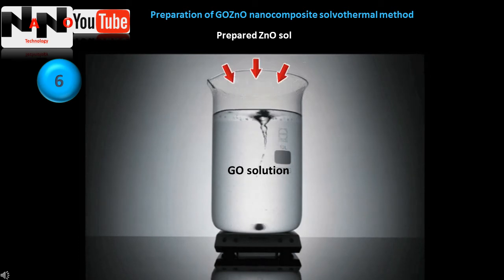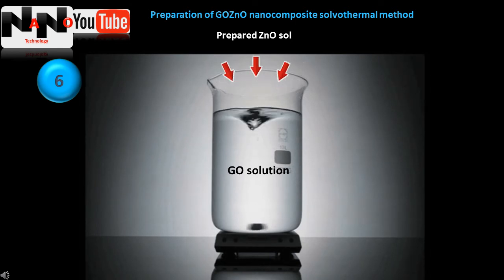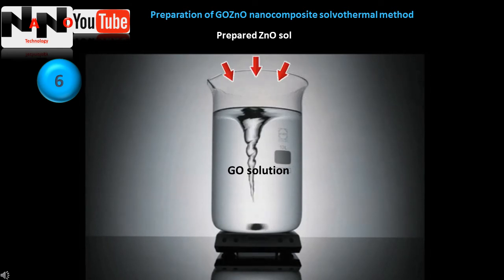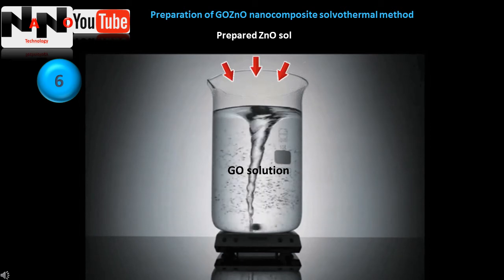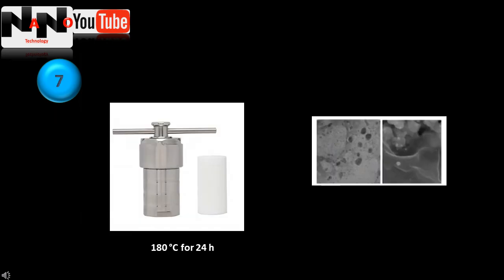Then the prepared zinc oxide sol is added to the graphene oxide solution and mixed again in the ultrasonic bath for 30 minutes. The final mixture is poured into a 50 milliliter Teflon-lined autoclave and heated to 180 degrees centigrade.